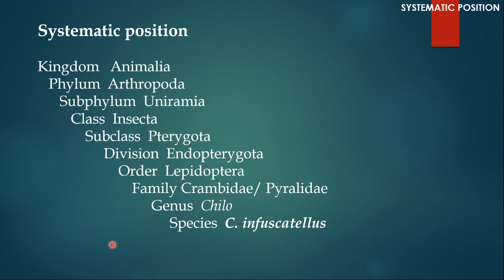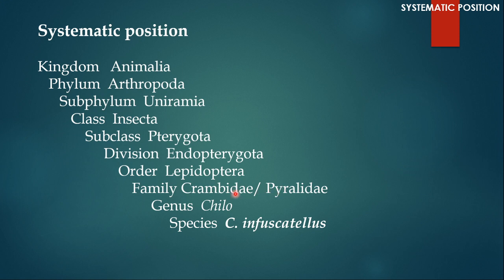Starting with systematic position, Chilo infuscatellus belongs to phylum Arthropoda, subphylum Uniramia, class Insecta, subclass Pterygota, division Endopterygota, order Lepidoptera, family Crambidae or Pyralidae, genus Chilo, species Chilo infuscatellus. For family, I have given two names — Crambidae and Pyralidae — because these two families are very close to each other. Some authors classify Chilo under Crambidae and some under Pyralidae. Both families belong to superfamily Pyraloidea.